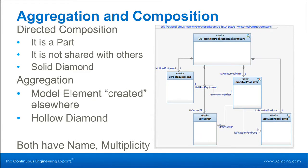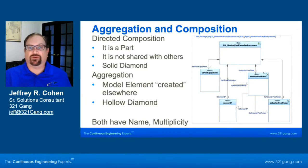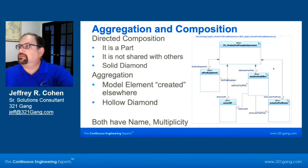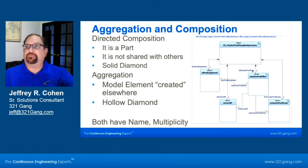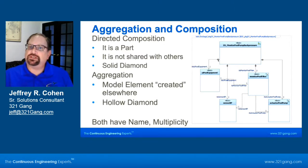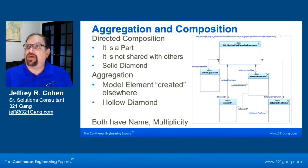There are special types of associations — aggregations and composition — and these give some more information. Aggregations can be either directed or bidirectional. An aggregation is a has-a relationship. In this case, the monitor pool filter has a sensor. Normally that would be shown with a hollow diamond. The composition relationship is shown by the solid diamond. So the monitor pool pump backpressure has a UI pool equipment. Within SysML, composition means that this part is created right here, and that part's name is its UI pool equipment.